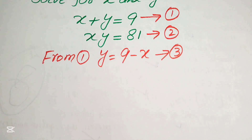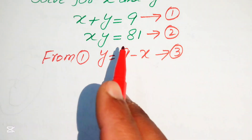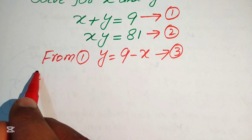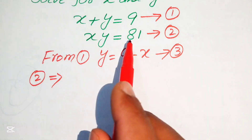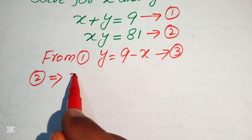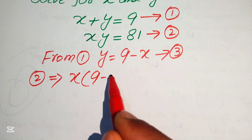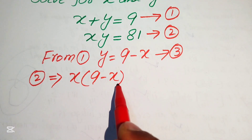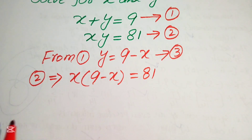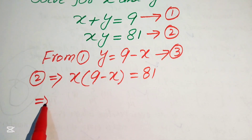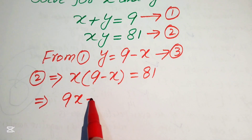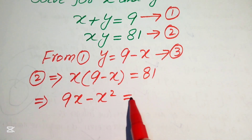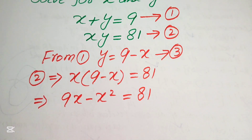In the next step, we substitute equation 3 into equation 2. Equation 2 gives us x times y equals 81, and replacing y with 9 minus x, we multiply x through both terms to get 9x minus x squared equals 81.